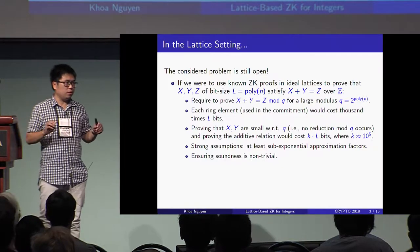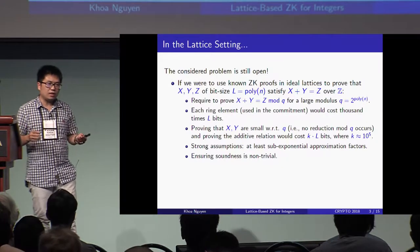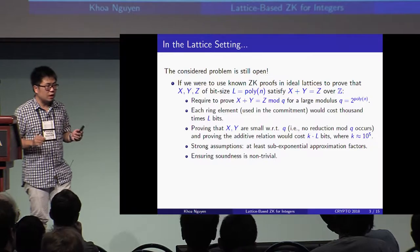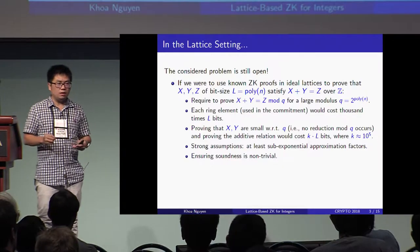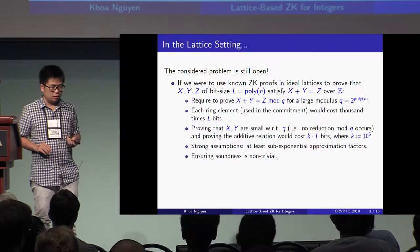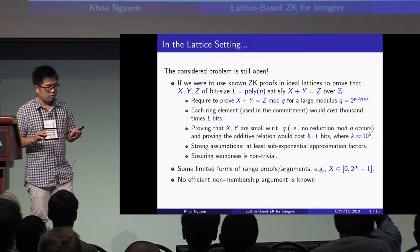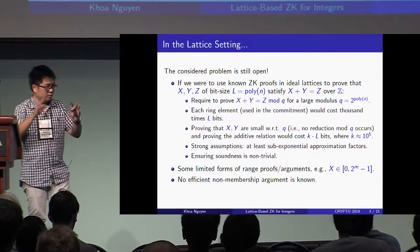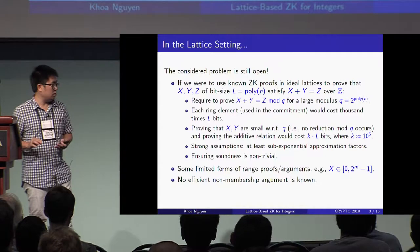Additionally, such a protocol would require very strong assumptions — for example, the approximation factor for the underlying ideal lattice problems would have to be at least sub-exponential. Moreover, ensuring soundness for such a protocol would be non-trivial, because if we use rejection sampling, the soundness property is only a relaxed soundness, and it's not clear how to define soundness in this setting. Regarding range proofs, we only have some limited form from lattices — for example, proving that a committed X belongs to the range 0 to 2^M minus 1 for some M. And there is no efficient non-membership argument from lattices known.